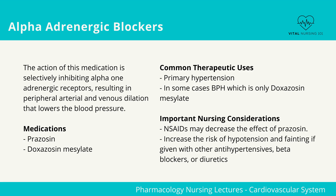Medications will include these two: Prazosin and Doxazosin mesylate. Common therapeutic uses include primary hypertension, and in some cases BPH, which applies only to Doxazosin mesylate.